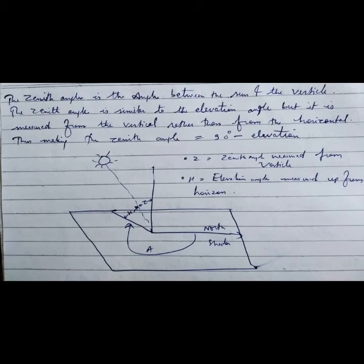This makes the zenith angle equal to 90 minus the elevation angle. So basically, Z equals the zenith angle measured from the vertical, and H equals the elevation angle measured up from the horizon. The zenith angle is measured in the vertical downward direction, and we subtract the elevation angle to get the zenith angle.